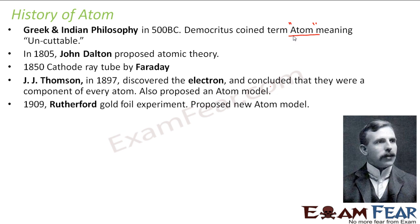Around 1909, another scientist named Rutherford came up with the gold foil experiment, and he proposed a completely new atomic model. Rutherford's model of atom is very similar to what we know about atoms today. With passage of time and efforts by different scientists, it was found that atom was divisible. Thomson's model was considered true at that time, but when Rutherford performed the gold foil experiment, he found a new atomic model which laid the basis of the real structure of the atom.